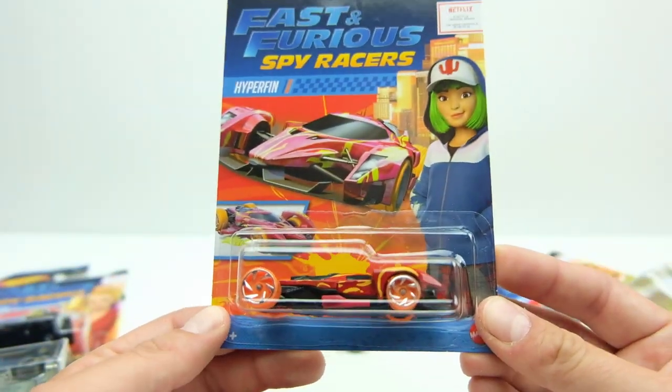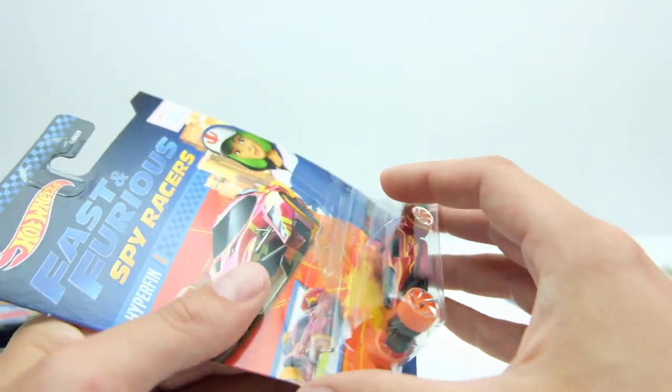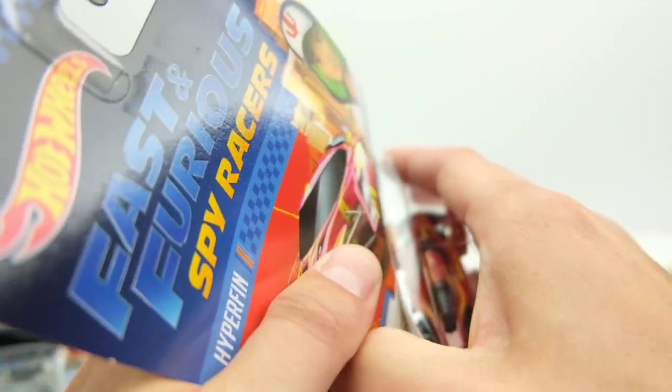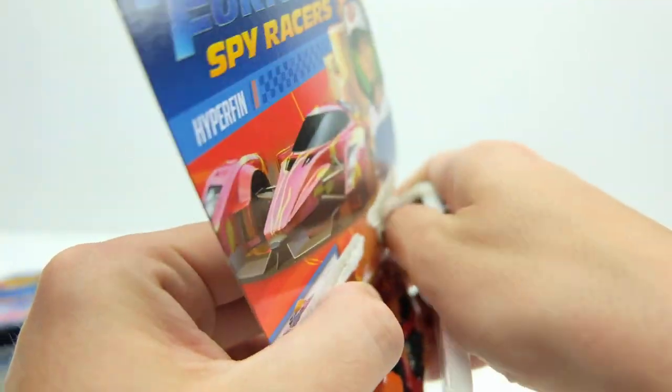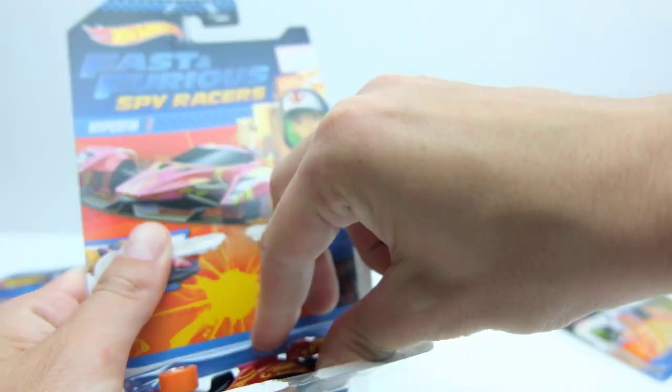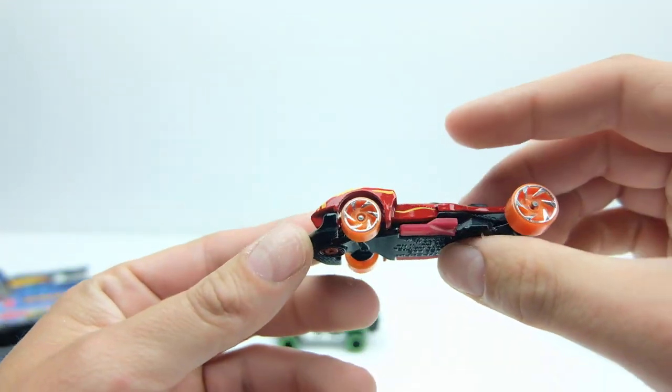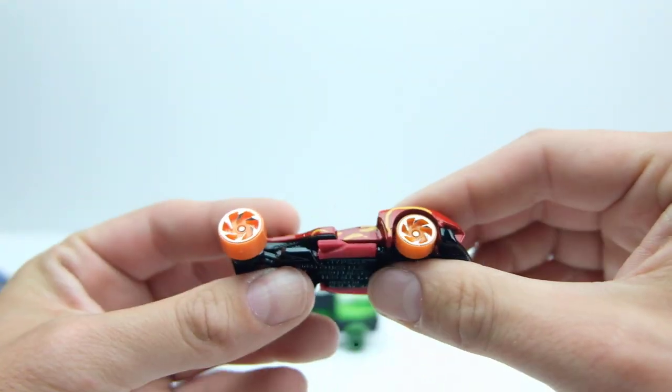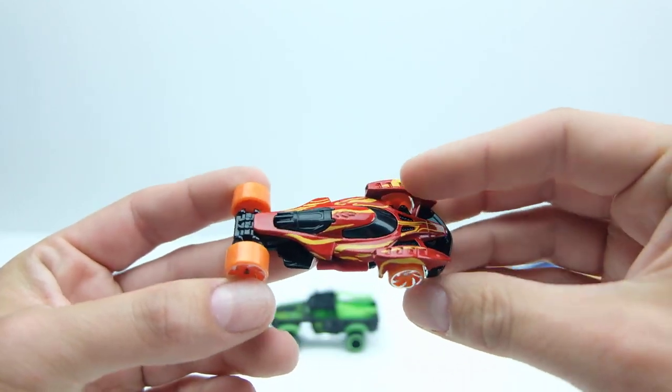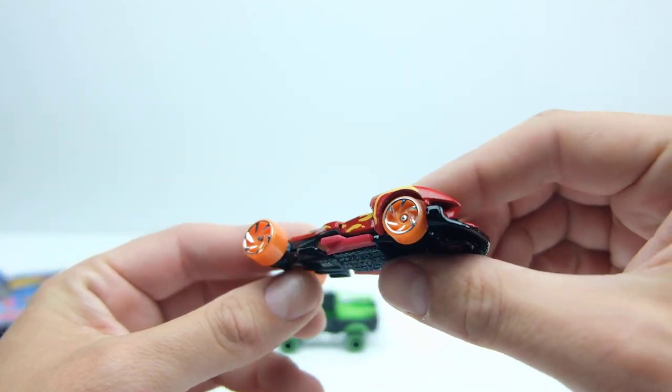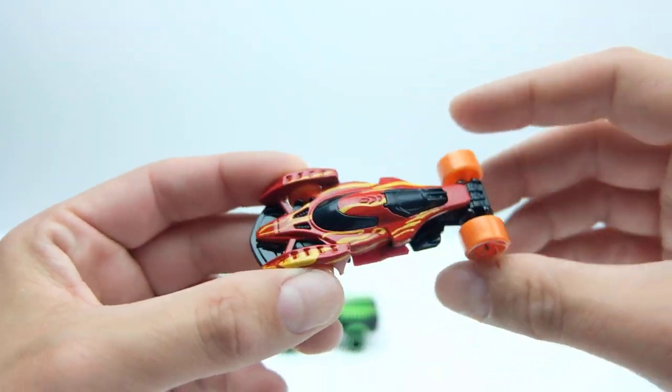Let's do this next one, the Hyper Fin. If you haven't checked out the series yet, go check out this series because it's pretty cool. It has like very Fast and Furious-ish storylines, almost directly out of the movie just changed a little bit for kids. This is the Hyper Fin, this is pretty cool. This looks like it would be really fast on a track.